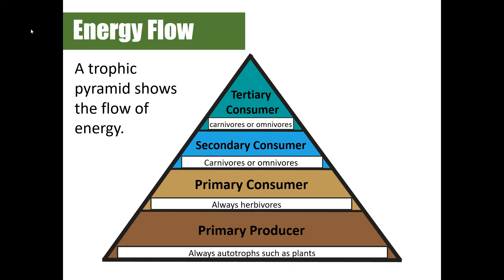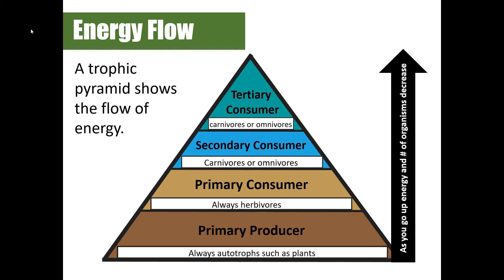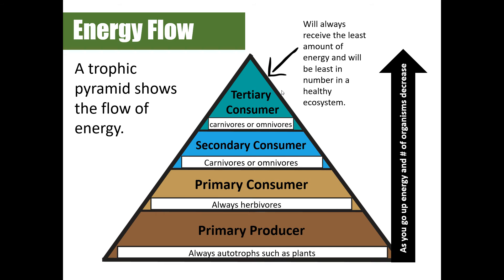You can also depict energy flow in an ecosystem through what's called a trophic pyramid. As you move up the trophic pyramid, the amount of energy and the number of organisms decreases. On the bottom is always your primary producer — they supply the most available energy and are greatest in number in a healthy ecosystem. Moving up, we have the primary consumer, secondary consumer, and tertiary consumers at the top, sometimes called apex predators — they're at the top of the food chain.